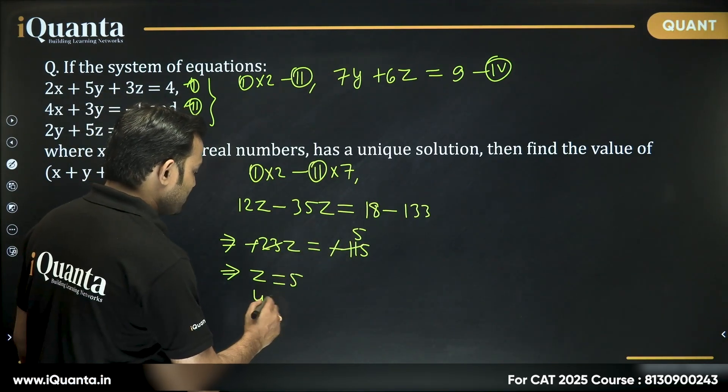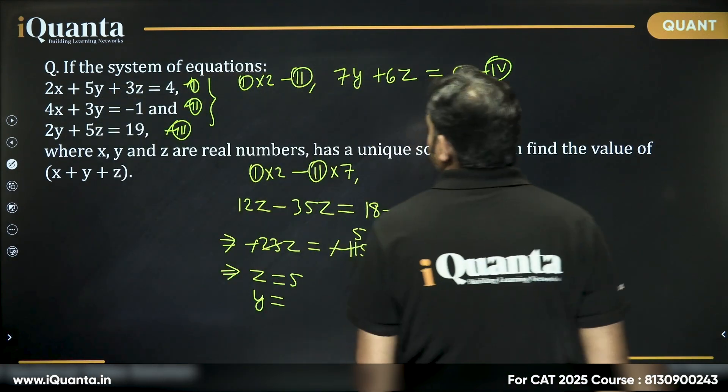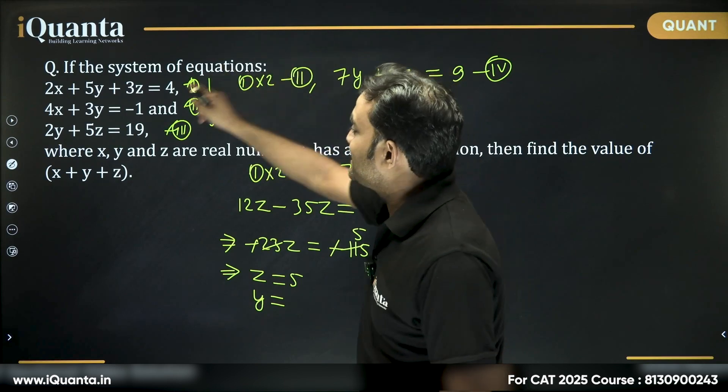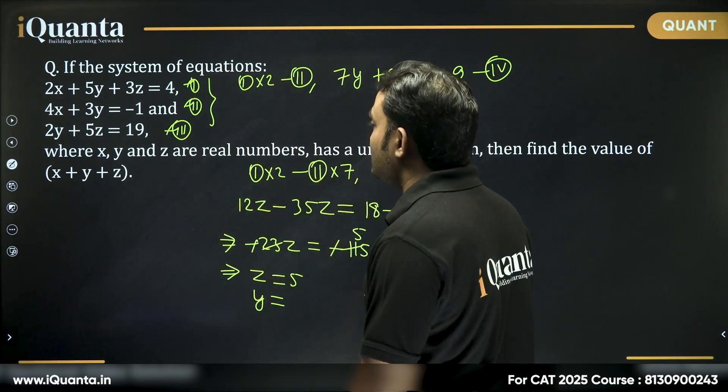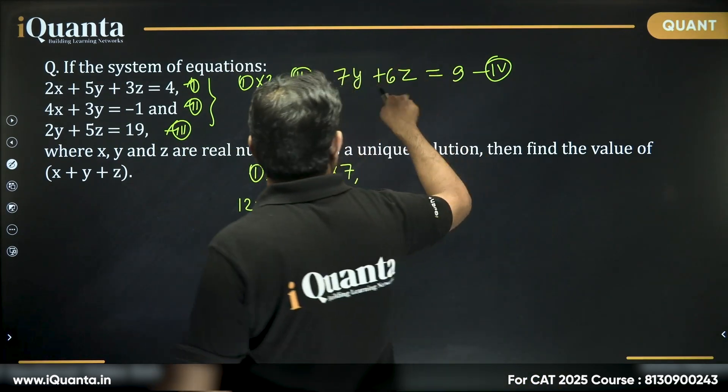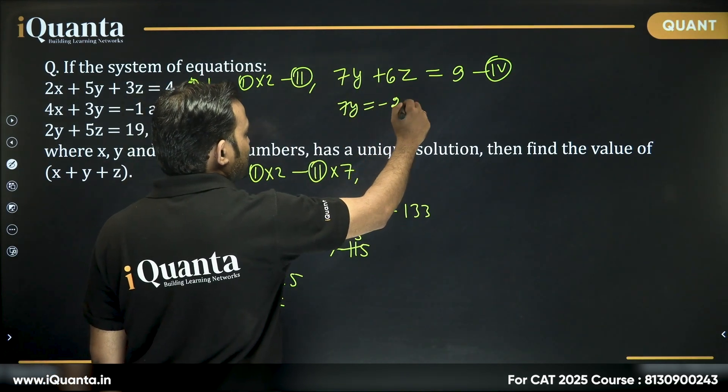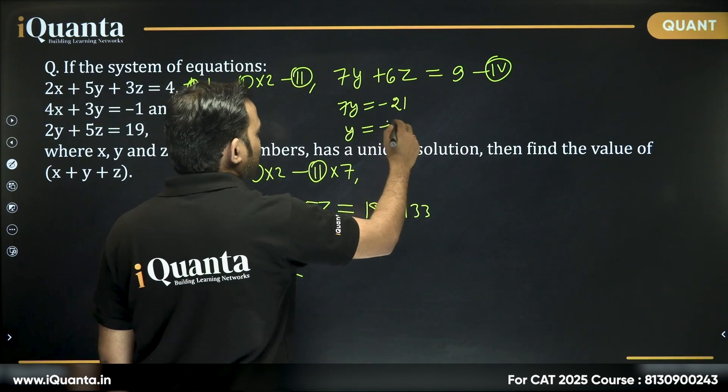If z = 5, can we find the value of y? Yes, you can put the value of z here and you will get the value of y. If I put z here, 6 times 5 is 30, so 7y + 30 = 9, which gives 7y = -21, so y = -3.